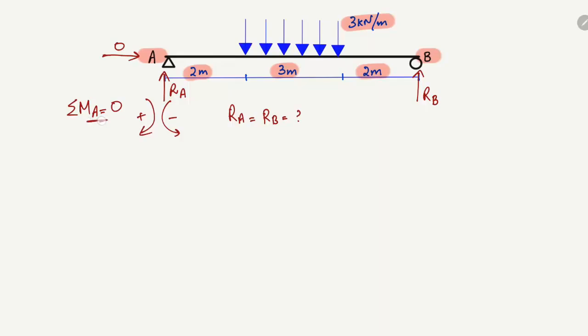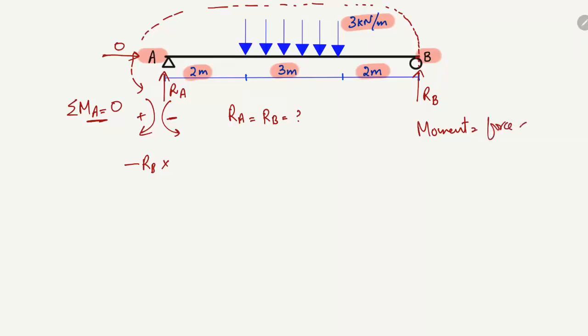Summation of moments at point A equals zero. Starting from the right side, RB is the force that creates a moment about point A. Since this force acts upward, it acts in an anti-clockwise direction about point A, so it will be negative: minus RB multiplied by the moment arm. Moment equals force times moment arm. The moment arm is the perpendicular distance from B to A, which is 2 + 3 + 2 = 7 meters.